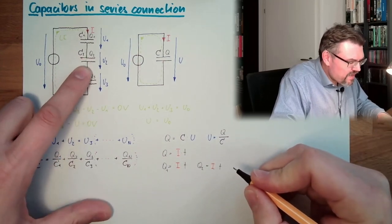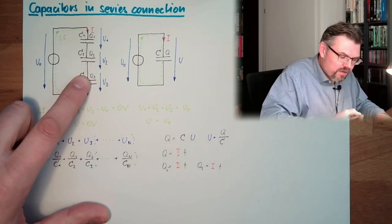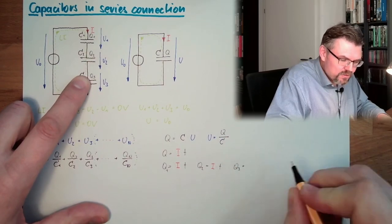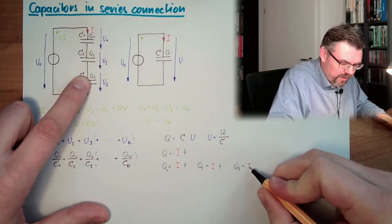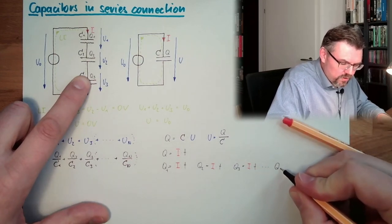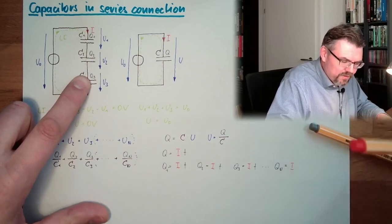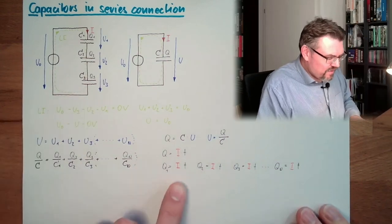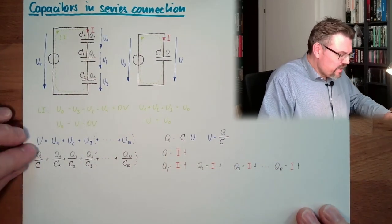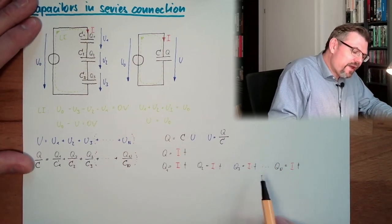And what is q3? It's always the same i, which is passing through, and always the same time, because I watch it at the same time. So there is q3 equals i multiplied by t. And so on. And of course, also a qn would be i multiplied by t.